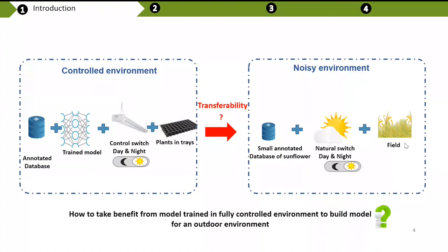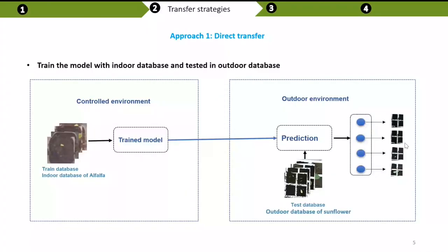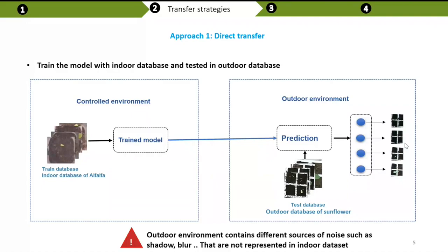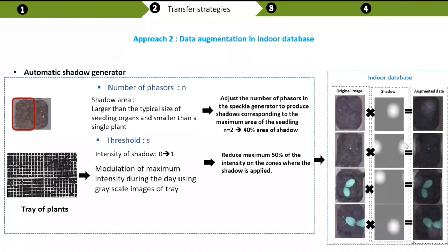To answer this question, we use three different approaches. The first is called direct transfer: we train the model on indoor datasets in a controlled environment and test it directly on outdoor datasets. The problem is that indoor datasets don't contain noise, shadows, or blur present in those images. So we test another approach called data augmentation, where we add some synthetic noise to indoor datasets to create synthetic outdoor datasets.